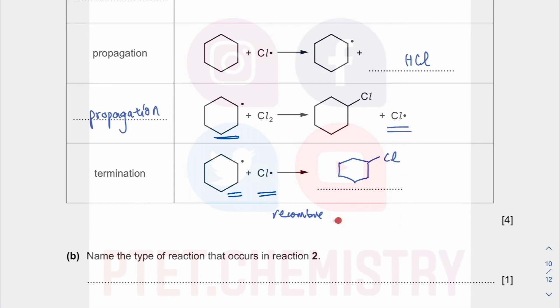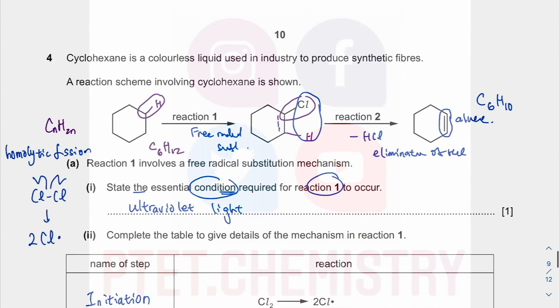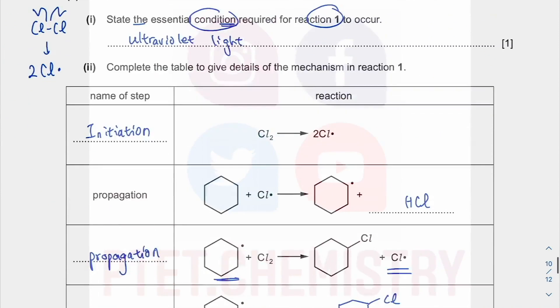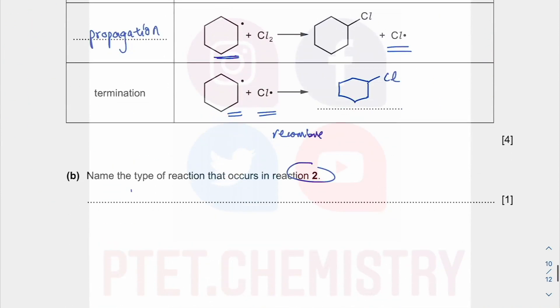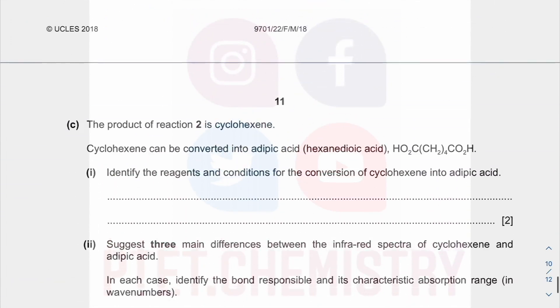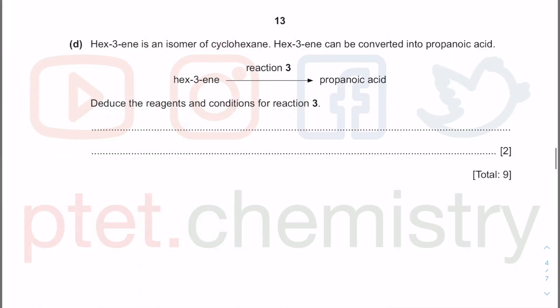Name the type of reaction that occurs in reaction two - that was just elimination. Because one reactant goes to one and two products, you eliminate, you kick out something. Whereas you only have one thing to begin with, you end up with more molecules than what you started with.